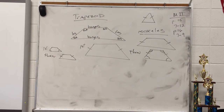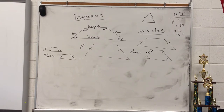If a trapezoid has a pair of congruent base angles, then it is an isosceles trapezoid — and that means all you have to do is have one pair.